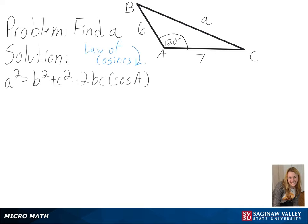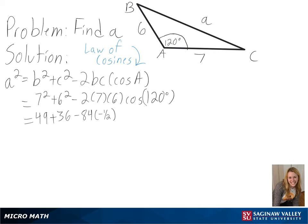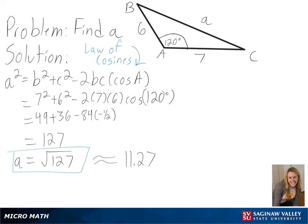We will first plug in our values, and then after simplifying, we will get a squared equals 127, or a equals the square root of 127 as our exact answer. We could also approximate this to get around 11.27 as our final answer.